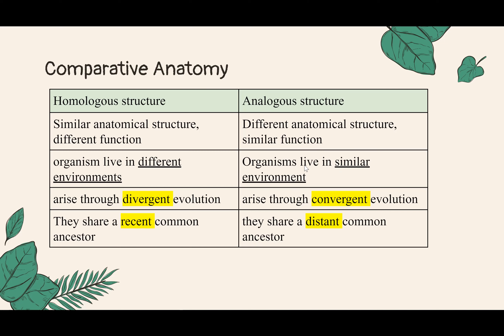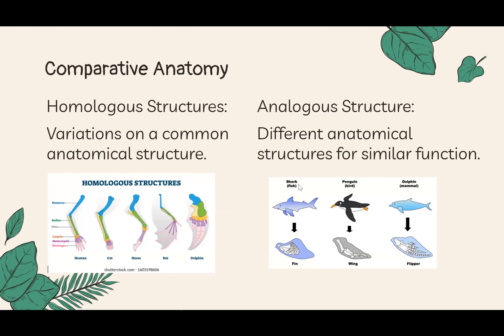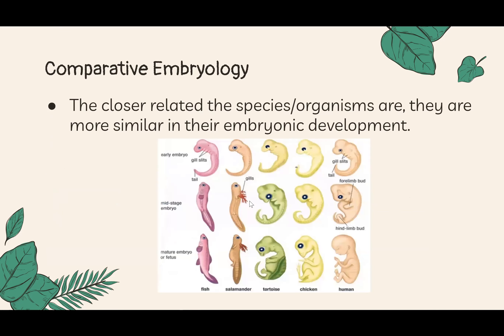Because their function is similar but they evolved independently, we call this convergent evolution. Examples include sharks, penguins, and dolphins — they all use their limbs to swim in water, but their structures are different. Now for comparative embryology: the more closely related species are, the more similar their embryos are in development, showing how different organisms develop from cells.